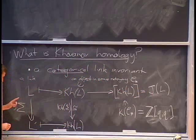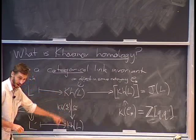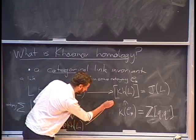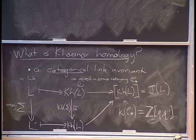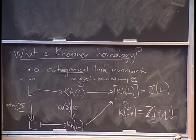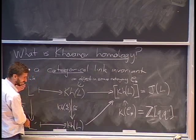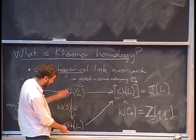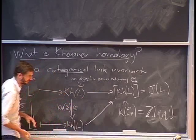Now, we can look at this object in the category associated to some link, and look at its representative in the Grothendieck group of the category. The Grothendieck group is actually just Z of Q, Q inverse. And if we identify the Grothendieck group with Z[Q, Q⁻¹], then this representative is exactly the Jones polynomial of the link. This is the sense in which Khovanov homology categorifies the Jones polynomial. Since isomorphic objects in the category automatically have the same representative in the Grothendieck group, isotopic knots have the same Jones polynomial.